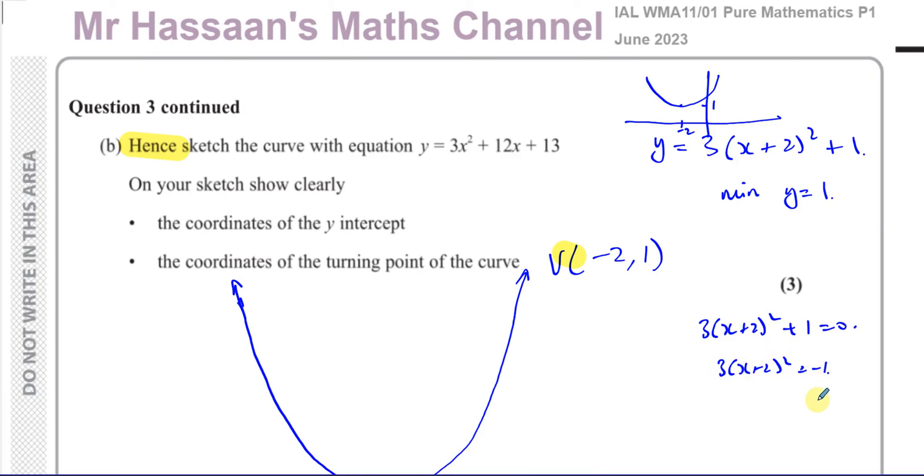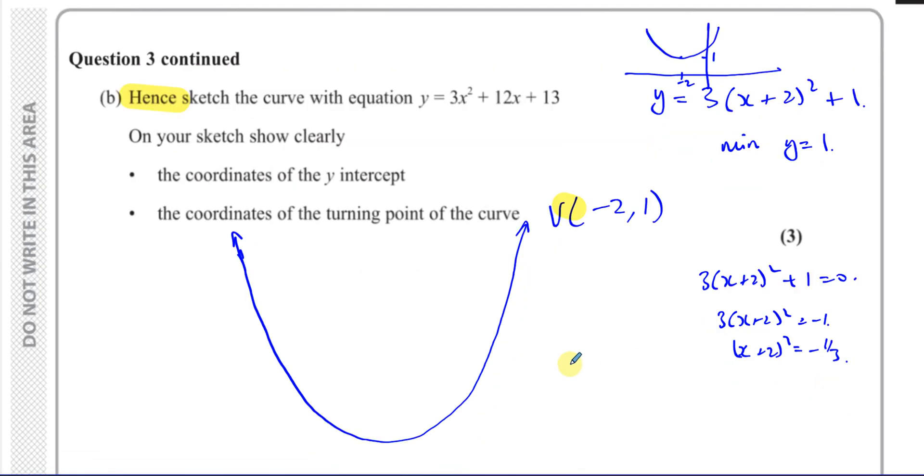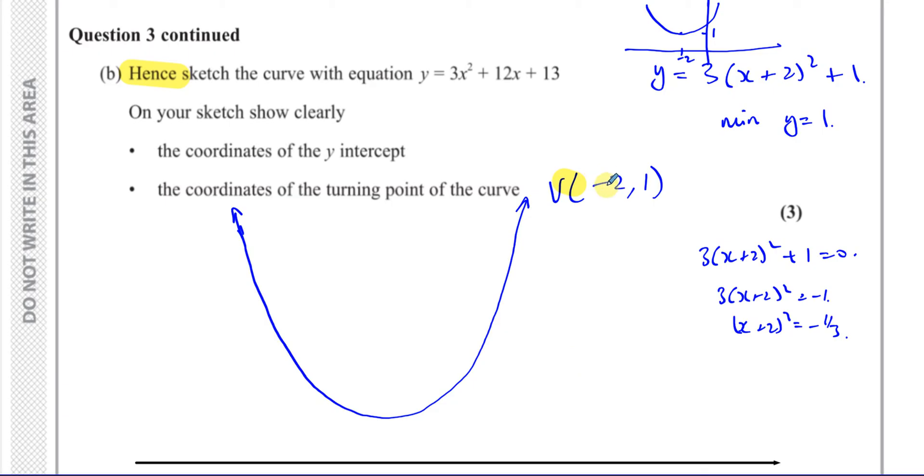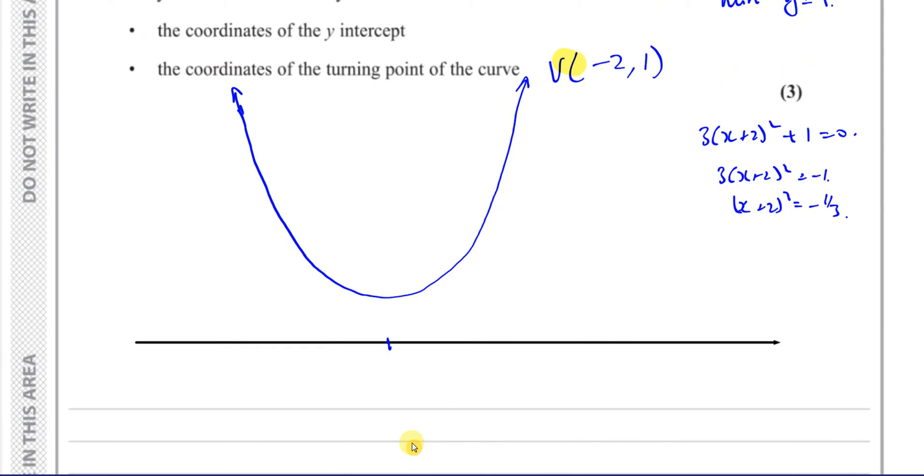And we know that the vertex is when x is -2, so -2 must be over here somewhere. That means the y-axis must be on this side. The y-axis must be somewhere over here. Let me make it thinner. The y-axis must be somewhere over here, because it goes to x = 0. So that's going to be the origin. That's the y-axis. That's the x-axis. That's the vertex (-2, 1). That's the y-intercept.